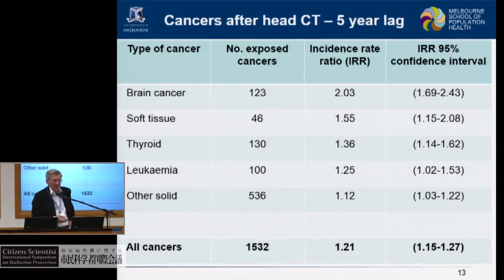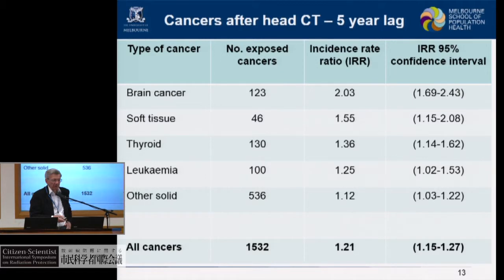We found increases in almost all cancers: brain cancer, soft tissue cancer, thyroid, leukaemia, and solid cancers generally. We are particularly interested in brain cancer because the majority of CT scans in this age group — about 60% — are scans of the head.